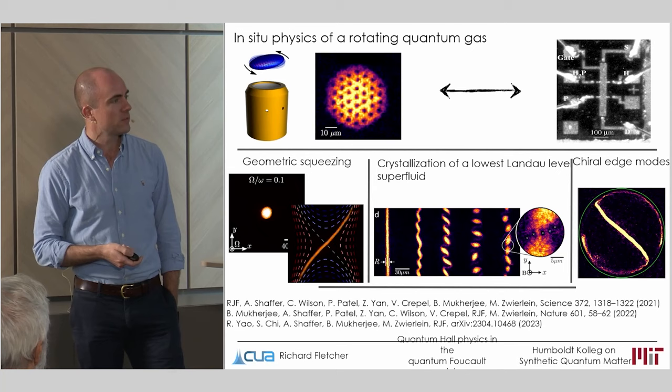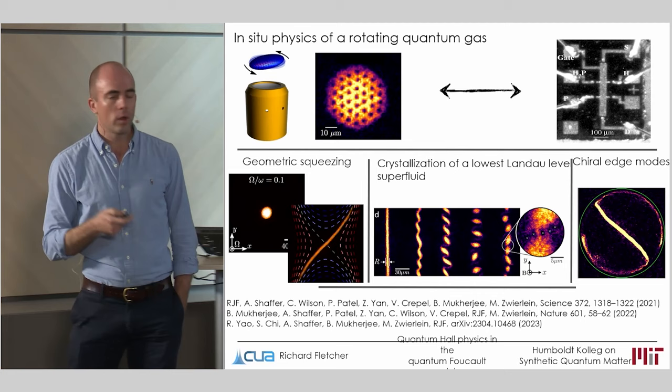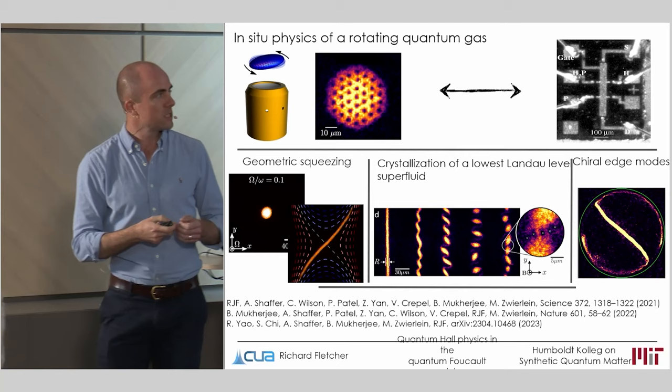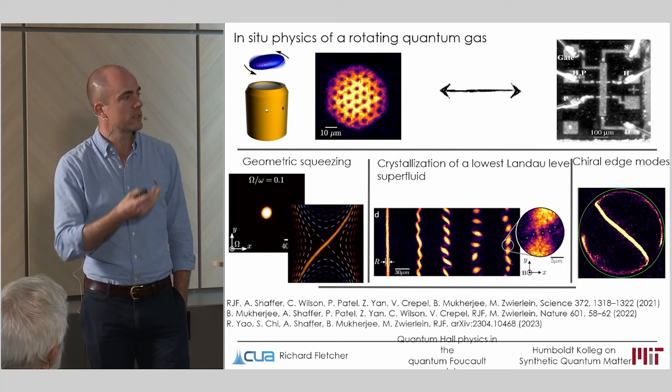The first concerns what we termed geometric squeezing. And this is quantum mechanical squeezing, so a redistribution of Heisenberg uncertainty. But rather than being between, say, position and momentum or different spin projections of a spin system, instead it's between the spatial coordinates of the atoms. In a rotating frame of reference, or for charged particles in a B field, X and Y themselves, in some sense, become non-commuting.